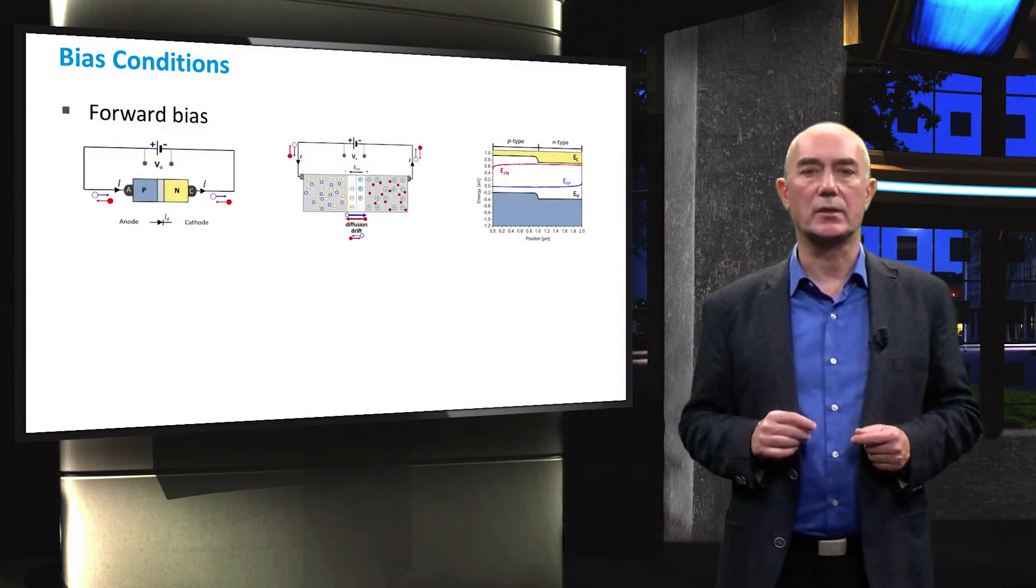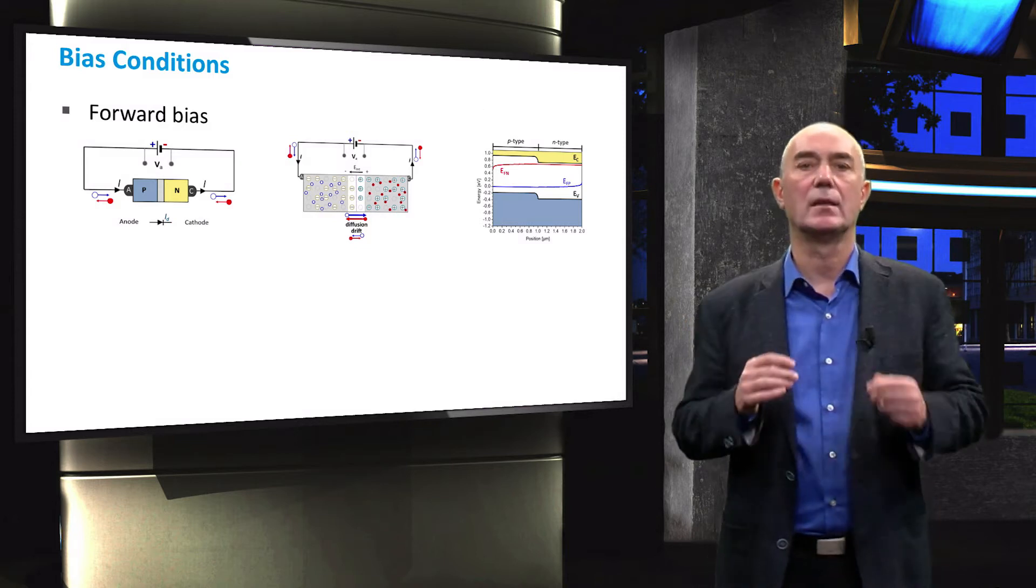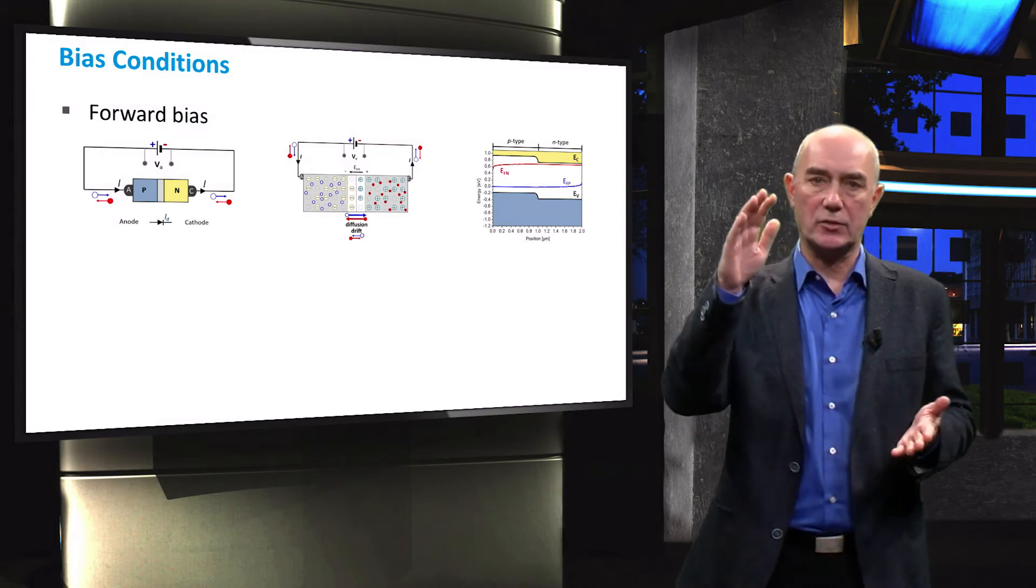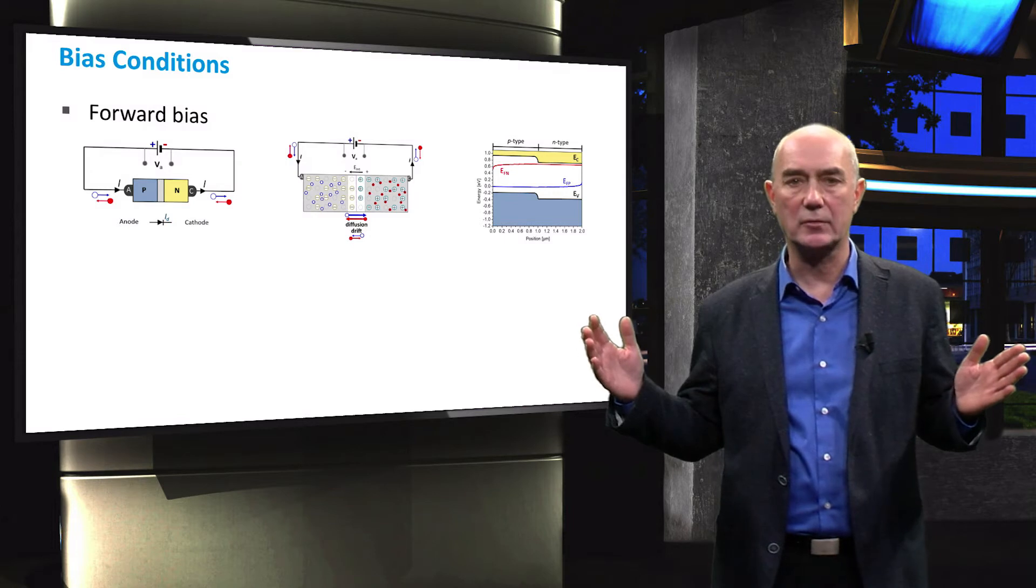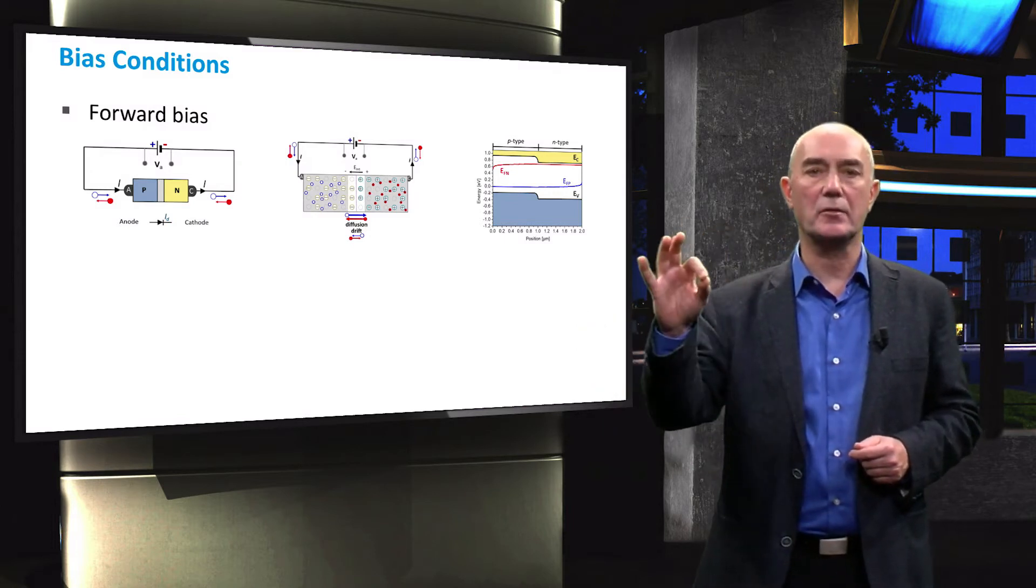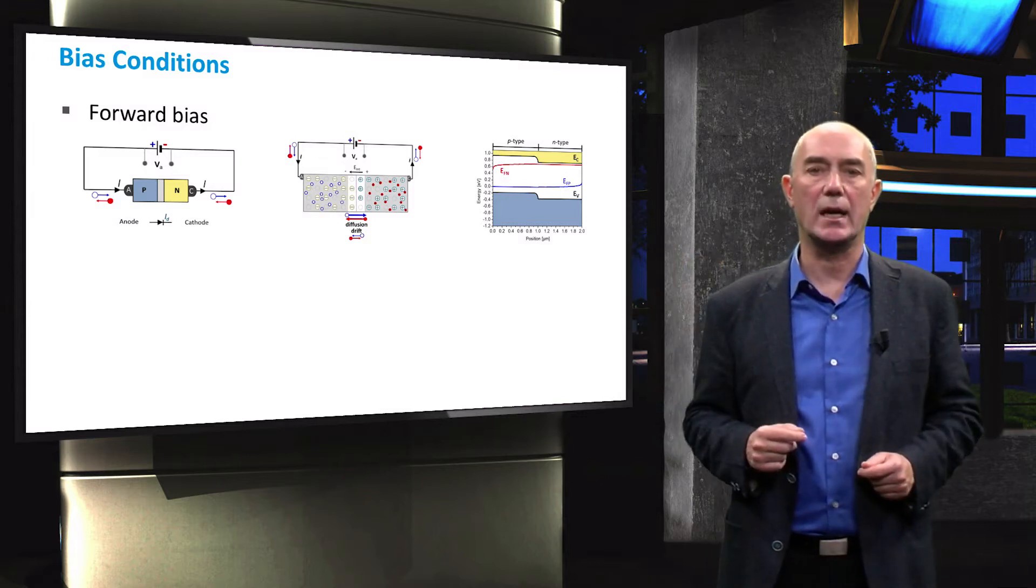In forward bias conditions, the depletion region in the diode shrinks. Consequently, the electrostatic potential across the depletion region decreases, allowing the diffusion current to dominate. This essentially turns the diode into a conductor and allows current to flow through the diode easily.